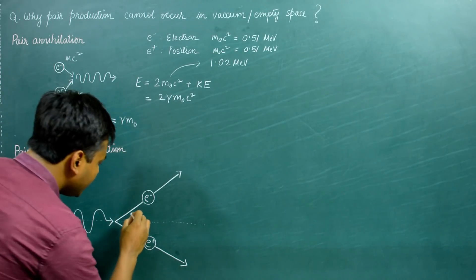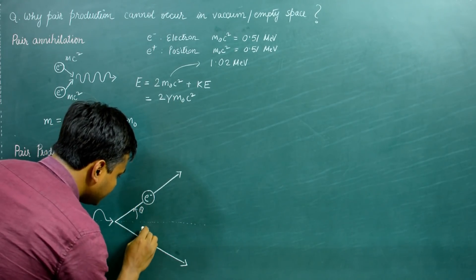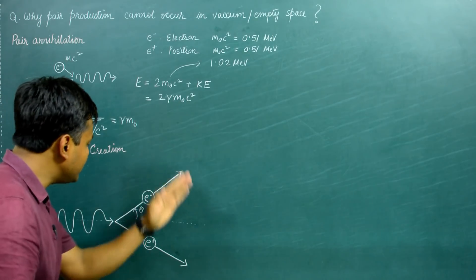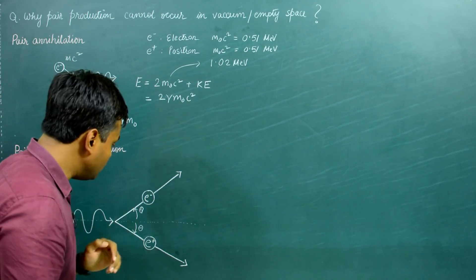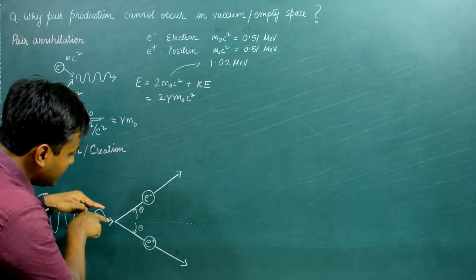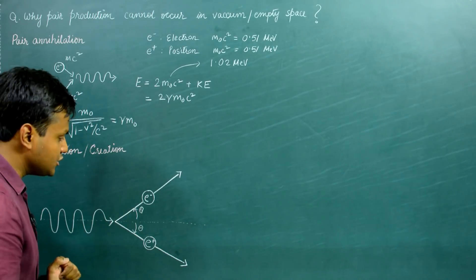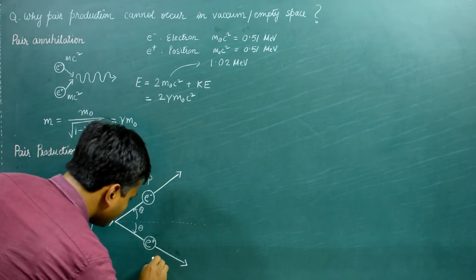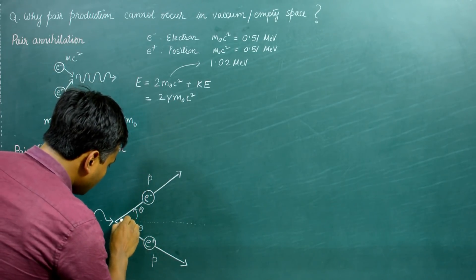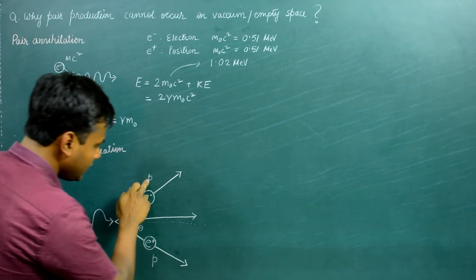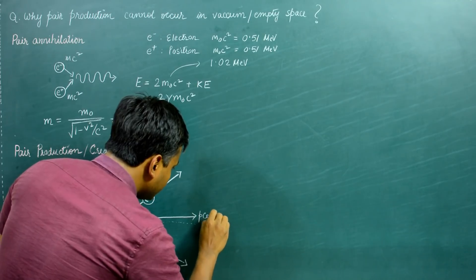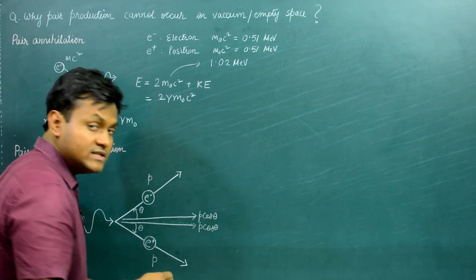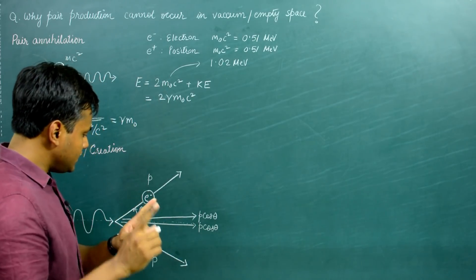By imposing conservation of perpendicular momentum, the angle θ at which the particle and antiparticle are created must be equal on both sides. Since they have the same mass, they are ejected at equal angles to cancel the perpendicular momentum. The only linear momentum remaining is along the original direction. If the electron's momentum magnitude is P and the positron's is P, then each contributes P cos θ along the forward direction.